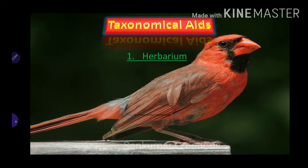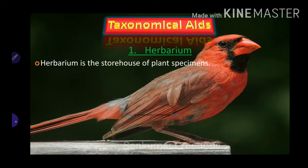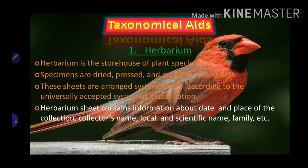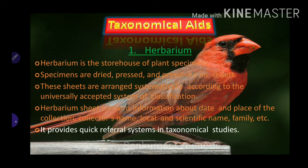Taxonomical aids — Herbarium: the first one is the herbarium. A herbarium is the storehouse of plant specimens. Specimens are dried, pressed, and preserved on sheets. These sheets are arranged systematically according to the universally accepted system of classification. A herbarium sheet contains information about the date and place of collection, collector's name, local and scientific name, family, etc. It provides a quick reference system in taxonomical studies.